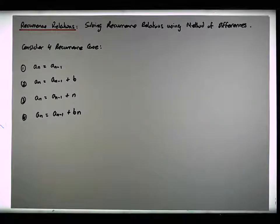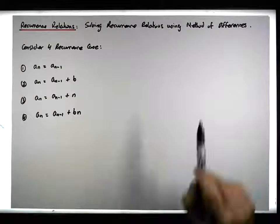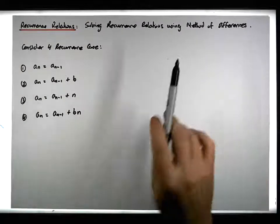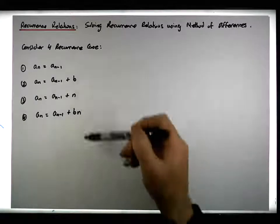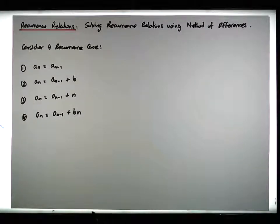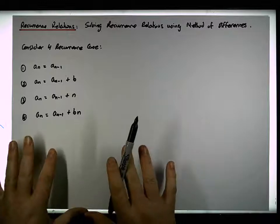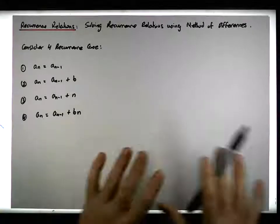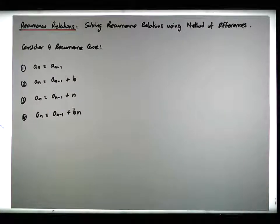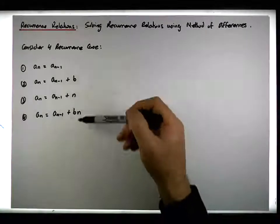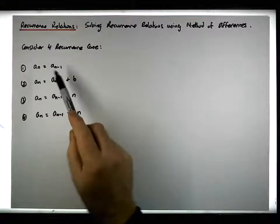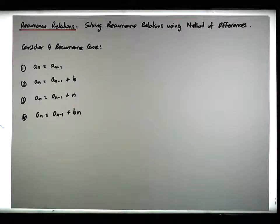The technique we're going to use is what's known as the method of differences. The method of differences doesn't always work, but will work in these particular special cases. In the next video we'll look at another method based on iteration to find a closed form formula for the nth term of a recurrence relation.